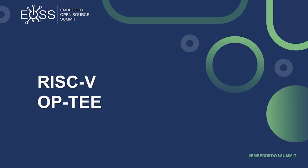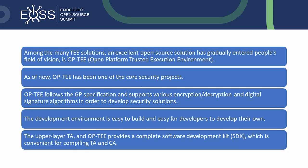Among the many TEE solutions, an excellent open source solution has gradually entered the community's field of vision: OP-TEE, the Open Portable Trusted Execution Environment. OP-TEE has been one of the core security projects, and after studying the major OP-TEE scheme, we decided to port it to RISC-V. This choice is justified by the fact that OP-TEE follows the Global Platform specification, is resilient against software and hardware attacks, supports various cryptographic and digital signature algorithms, and provides a complete SDK for creating trusted and client applications, with ease of use and complete documentation.